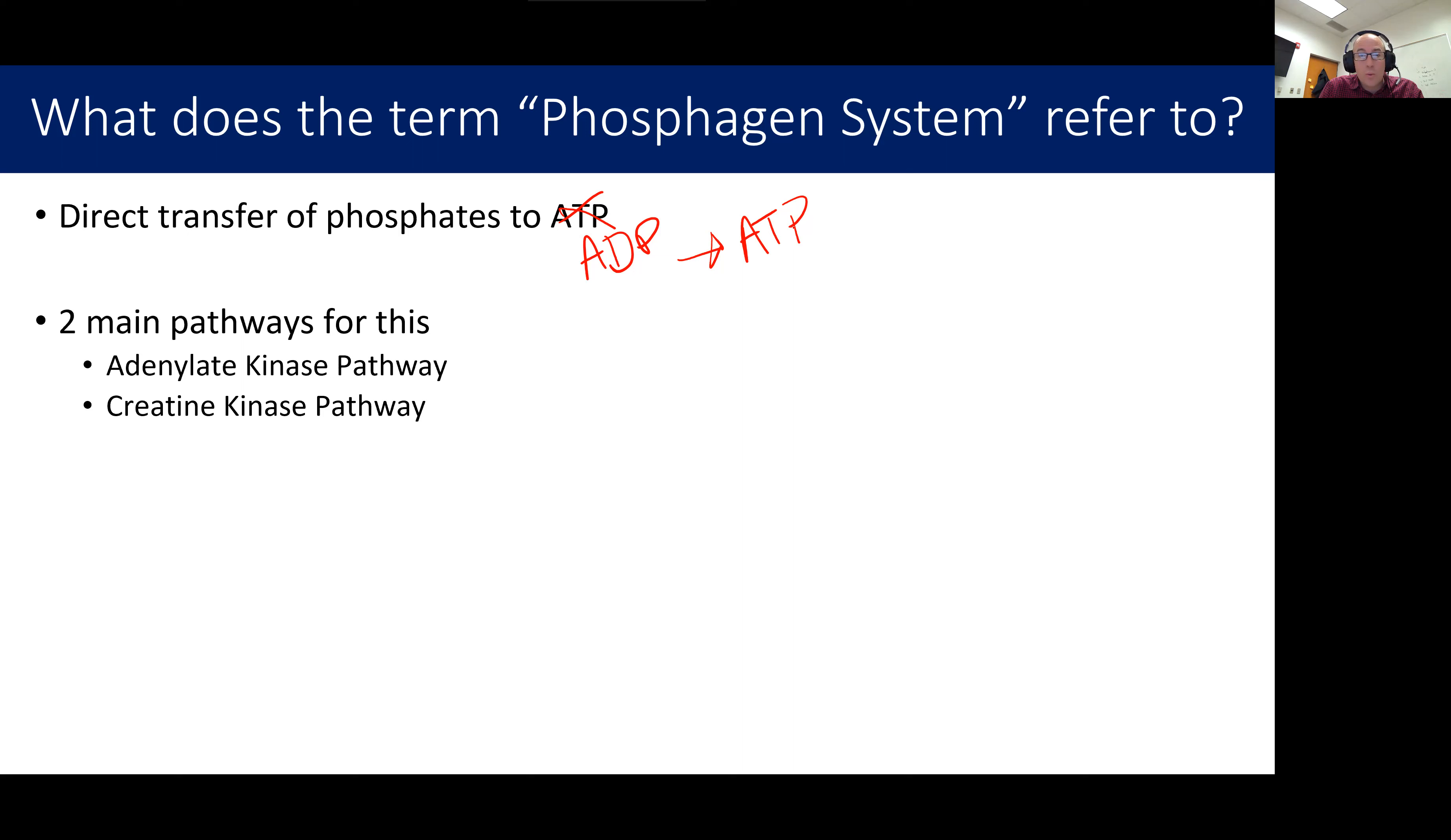And again, this happens with one main enzyme. So it's a very simple step. And based off of the name, the phosphagen system, all we're doing in both of these is we're going to take a phosphate off of another group.